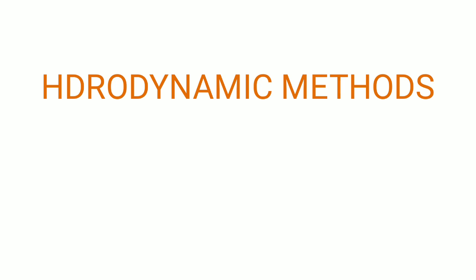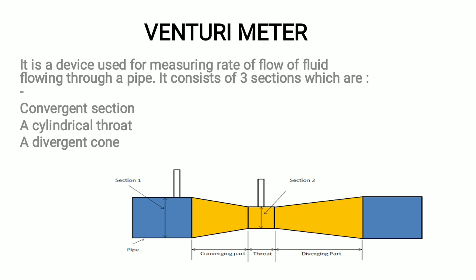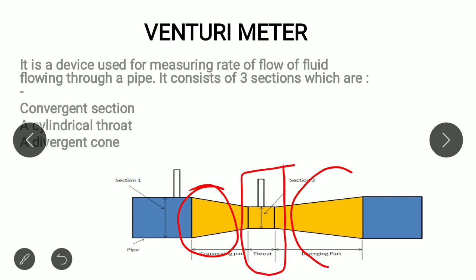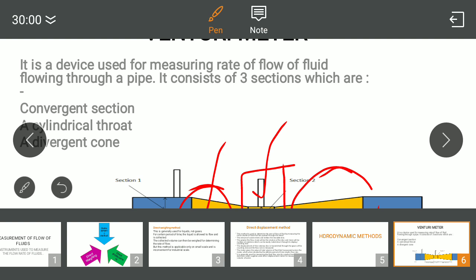The third and the most commonly used method is the hydrodynamic method. Based on the dynamics of water, these methods measure the flow of fluid. First one among them is the venturi meter. Actually, venturi meter is the device which is consisting of three main sections: one, a converging part, this one is the throat, the middle portion and this one is the divergent part. It is basically of three different sections it consists of.